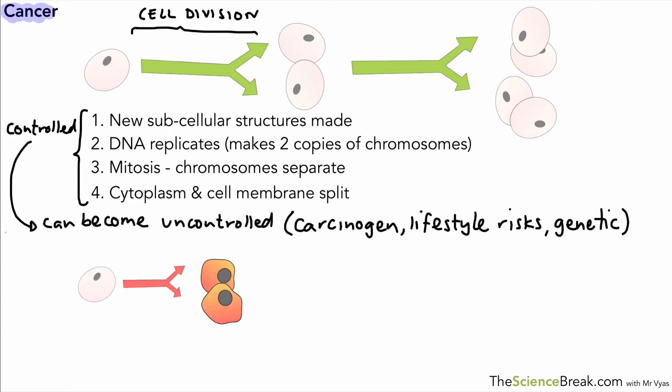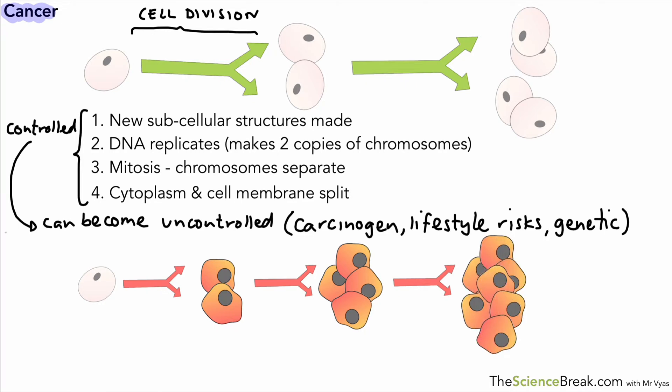When it does, what we get is the cell dividing very rapidly and in an uncontrolled way, producing abnormal cells. These abnormal cells, or this group of abnormal cells, is called a tumour.